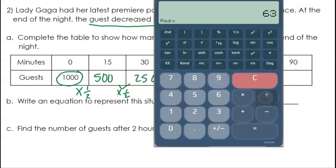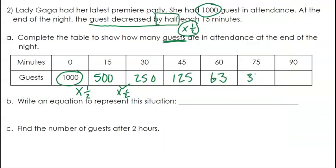And then if we take 63 and divide that by 2, we're going to get 31 and a half. So we can round that up to 32. And then half of 32 would be 16. So that would represent the amount of guests at 15-minute increments.